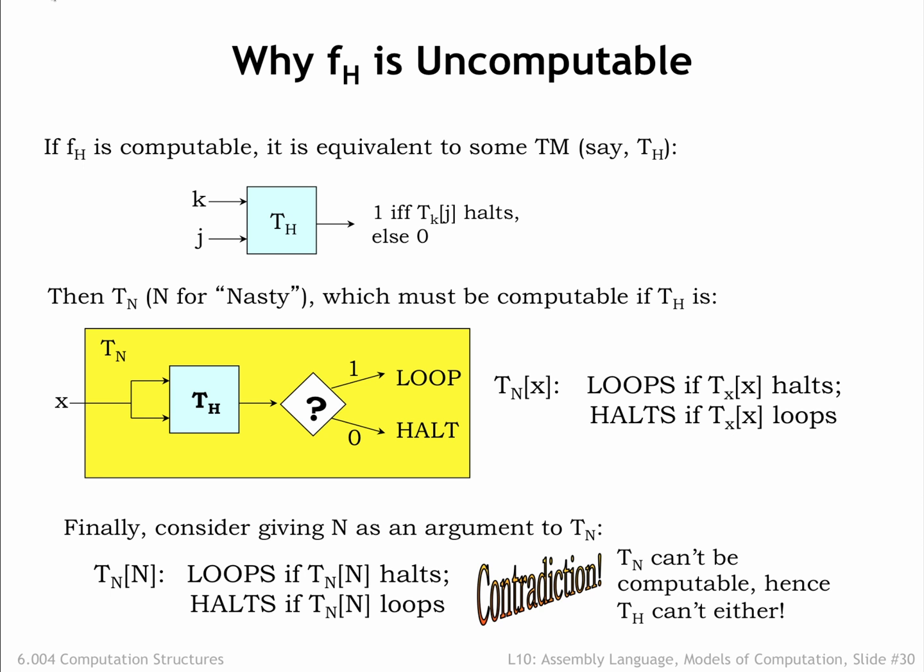Obviously, T_N can't both loop and halt at the same time. So, if the halting function is computable and T_H exists, we arrive at this impossible behavior for T_N applied to the argument N. This tells us that T_H cannot exist and hence that the halting function is not computable.